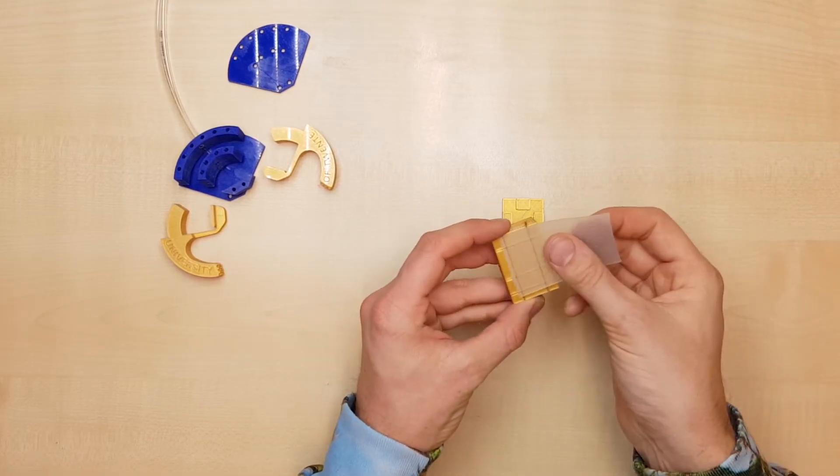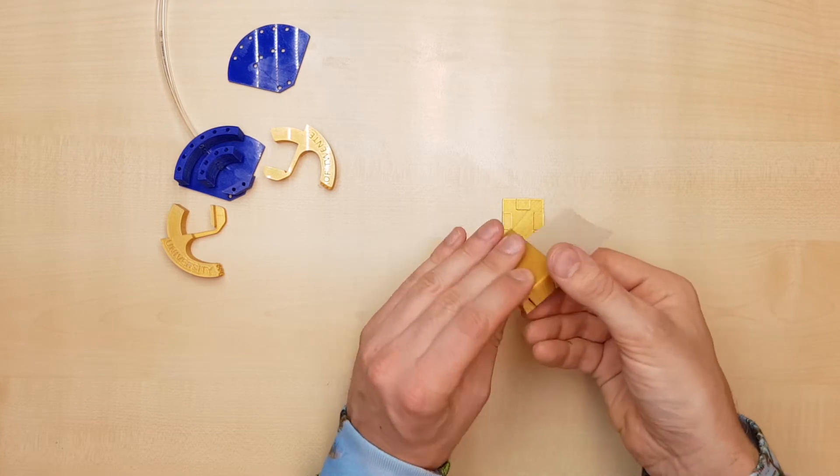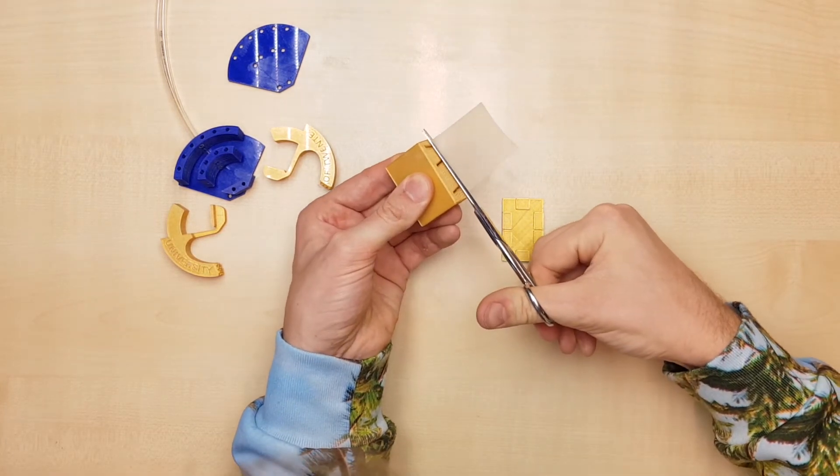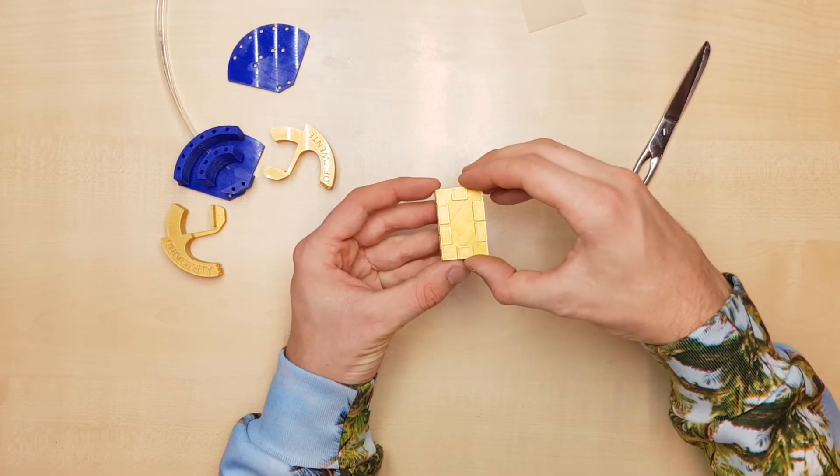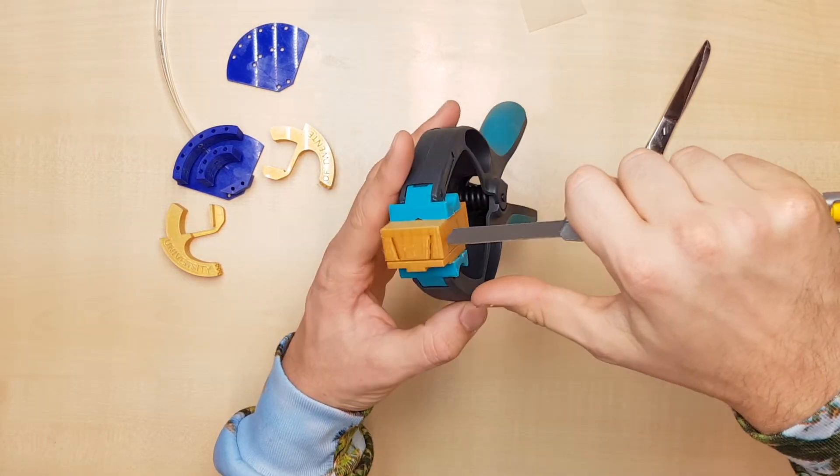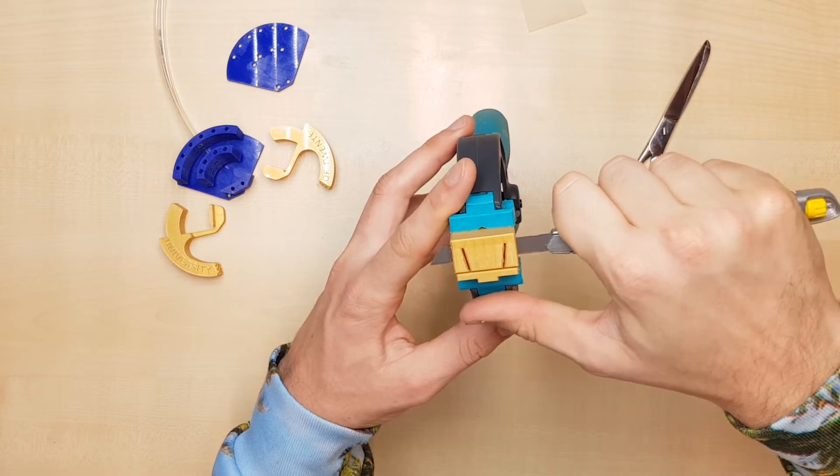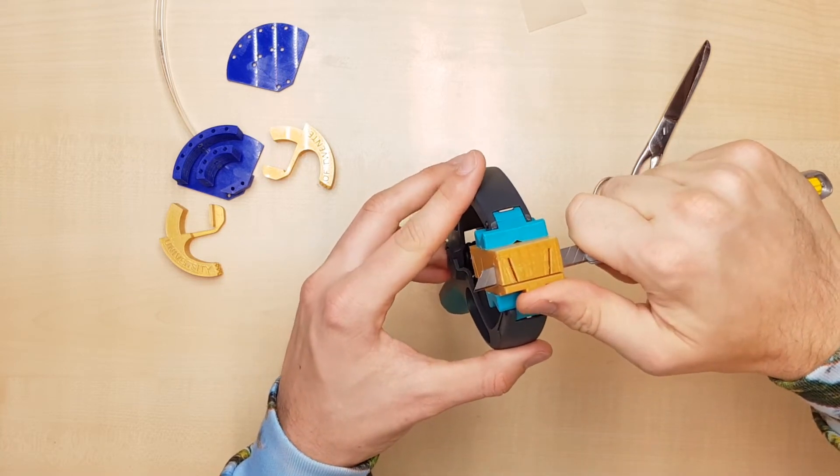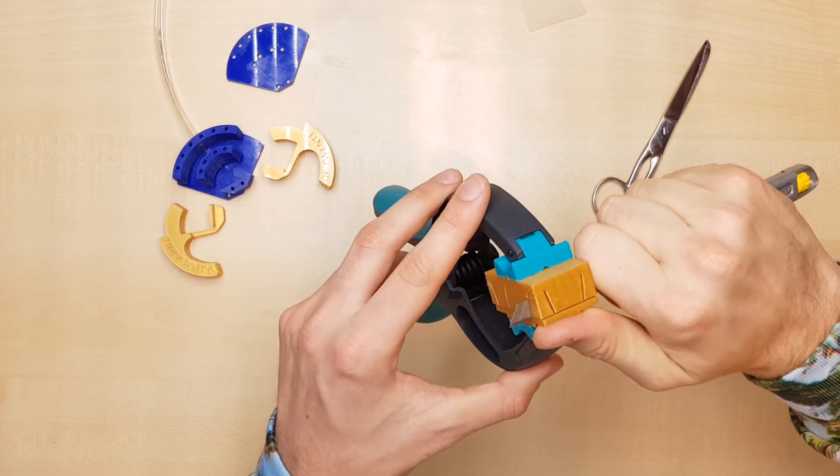The seals are cut using the 3D printed guides. 1mm thick silicone rubber works the best. A 9mm blade knife is inserted and then pushed downwards. The seal must stay in place during the cutting process.